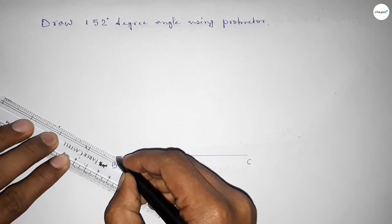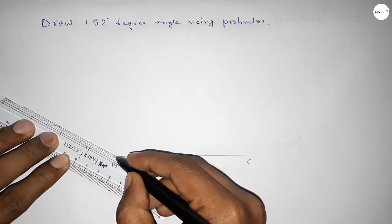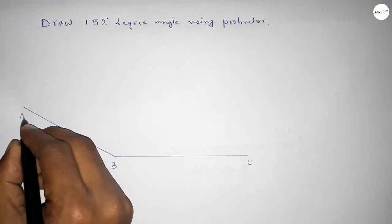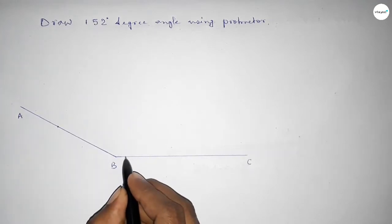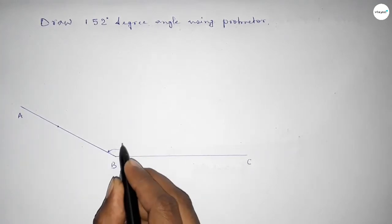Now taking here point A. So angle ABC, up to this, this is 152 degree angle.